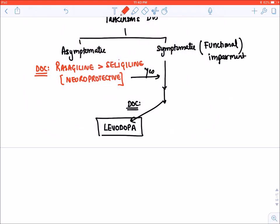And you will write levodopa is the drug of choice for moderate to severe forms of Parkinson's disease. And it is a drug of choice in India.